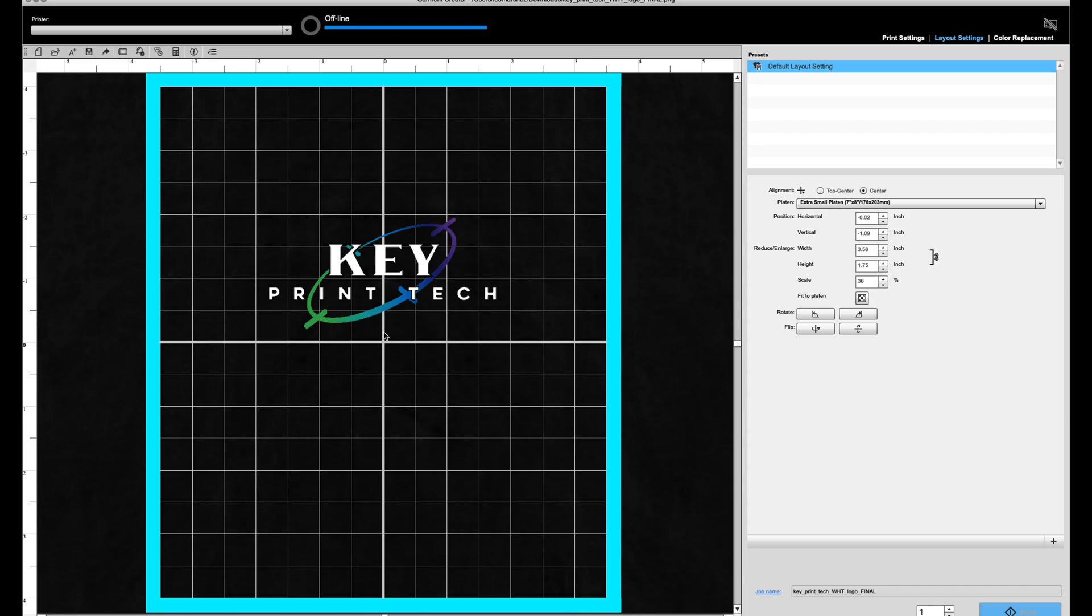If I wanted this to be a little bit bigger I can definitely extend it and make it bigger, or if I wanted to drop it down and make it a little bit lower I can definitely do that. But for this example, let's hit print and let's go to the machine to watch the finished product.